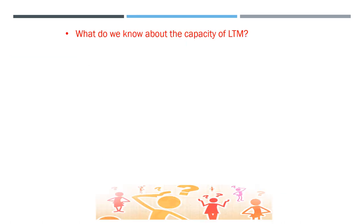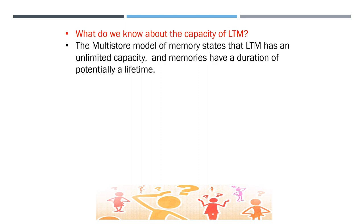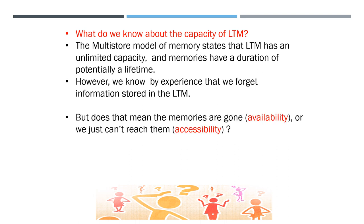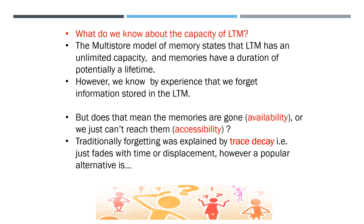We presume that the capacity of long-term memory is unlimited — so it's potentially a lifetime that all these memories last. But we do know that we tend to forget things. Some things might be difficult to remember; we might need a cue like a photograph or somebody talking about a specific memory. But does it mean they are gone forever? There could just be trace decay — memories fading slowly with age. However, we generally accept a popular alternative: interference or retrieval failure.